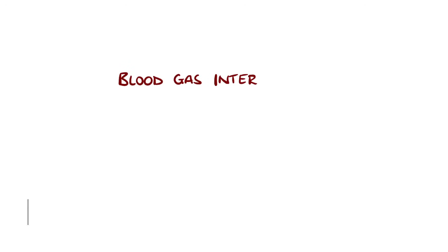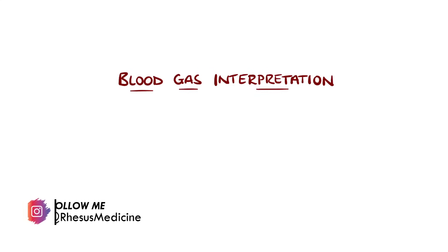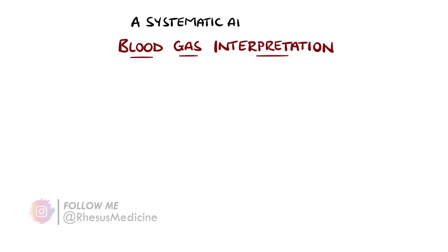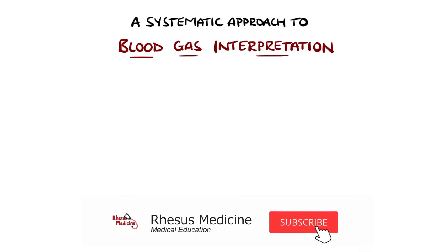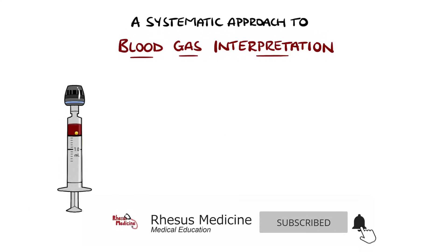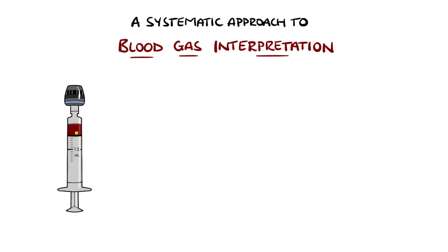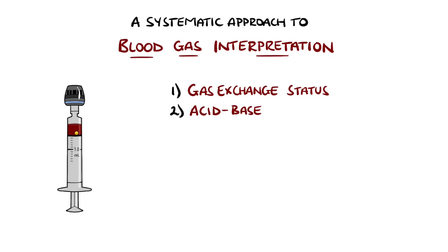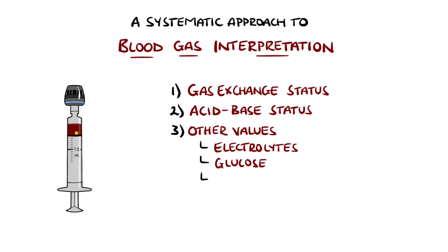In this video, we look at a systematic approach to interpreting blood gases, particularly arterial blood gases, but we will also look at venous blood as well. Blood gases give us information on the gas exchange status, the acid-base status of the patient, and can give a preliminary indication of other values as well. So they are a very useful test in the acute setting.